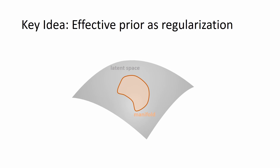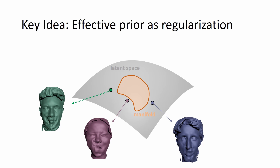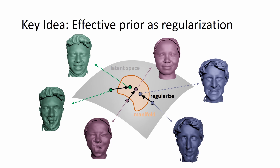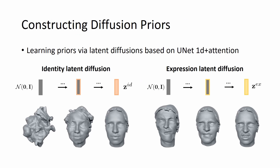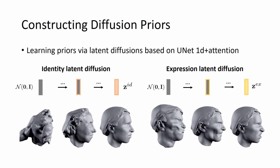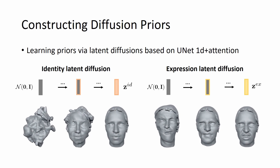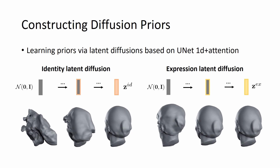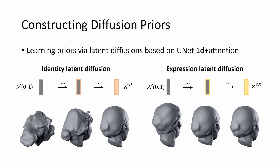Thus, we aim to learn an effective prior-as-regularization for the optimization of latent codes. Optimized latents are pushed towards the underlying latent surface manifold, generating high-quality head geometry. To construct priors, we train identity and expression latent diffusion using a denoising network composed of unit 1D and attention layers.